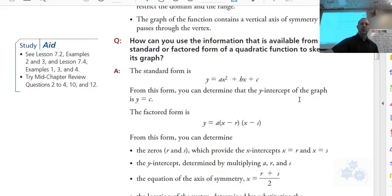So 7.2, here we talked about standard and factored form. This is standard form for a quadratic equation: ax² + bx + c. And this is factored form: a(x - r)(x - s). So the r and the s are the x-intercepts. So if the x-intercepts were 2 and 4, this would show up as (x - 2)(x - 4).